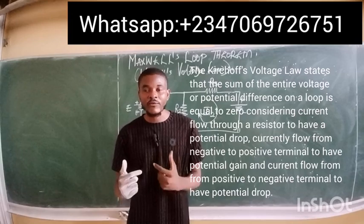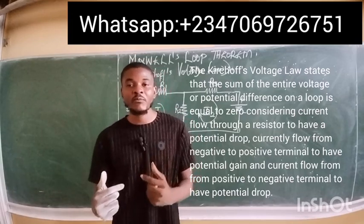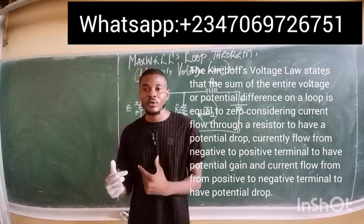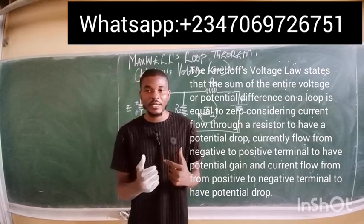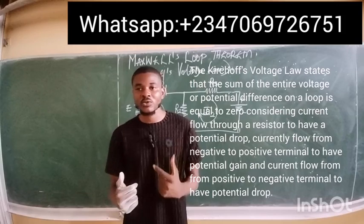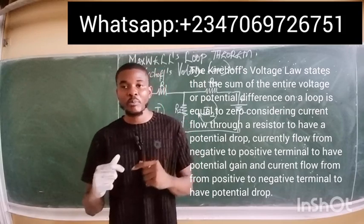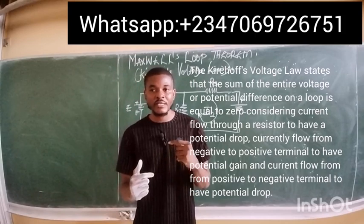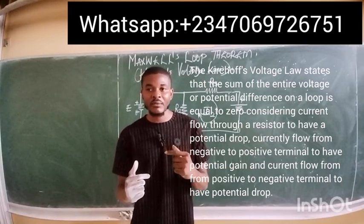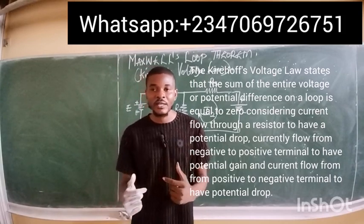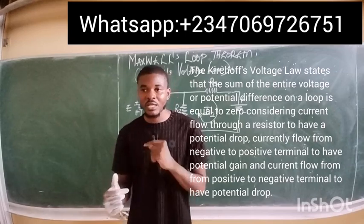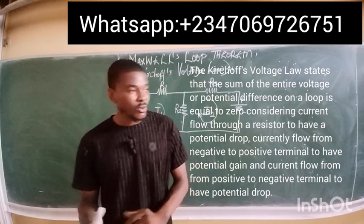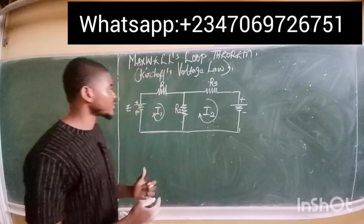This is considering current flowing through a resistor to have a potential drop, and also current flowing from a negative terminal to a positive terminal to have a potential gain, and current flowing from a positive terminal to a negative terminal to have a potential loss or potential drop.